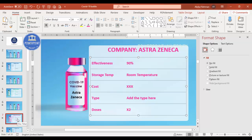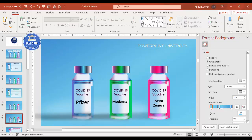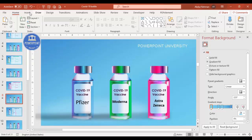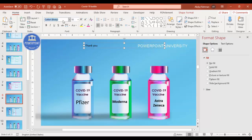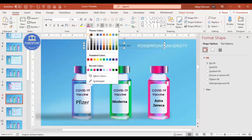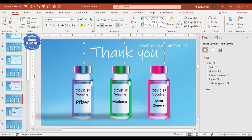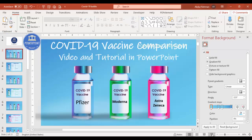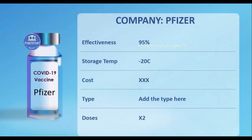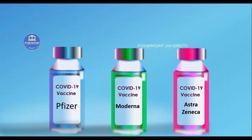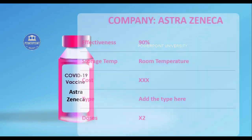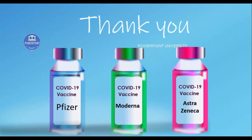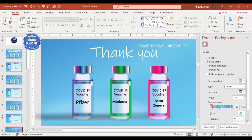For the last slide, I'll duplicate the previous slide, bring it here, and add a text box saying 'Thank you'. I'll choose the Ink Free font, make it white, and increase the size. Now let's play and see how it looks: first slide, click and the Pfizer details come up, bottles come back, then it shows Moderna, then comes back, then AstraZeneca, and finally it says 'Thank you'. This is the simplest way you can do the vaccine comparison.